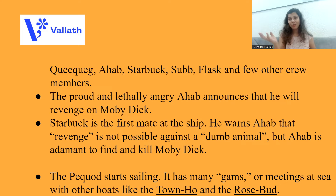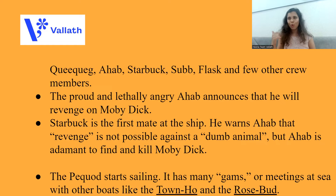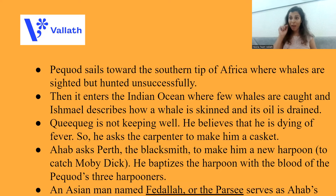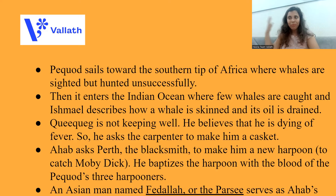The Pequod starts sailing. It has many gams — meetings at sea with other boats and seafarers. A gam is a term used at sea when sailors meet each other. Pequod has meetings with other boats, including the Town Ho and the Rosebud. Pequod sails towards the southern tip of Africa, where whales are sighted but hunted unsuccessfully. After this, Pequod enters the Indian Ocean, where a few whales are caught. The narrator Ishmael describes how a whale is skinned and how the oil is drained out.